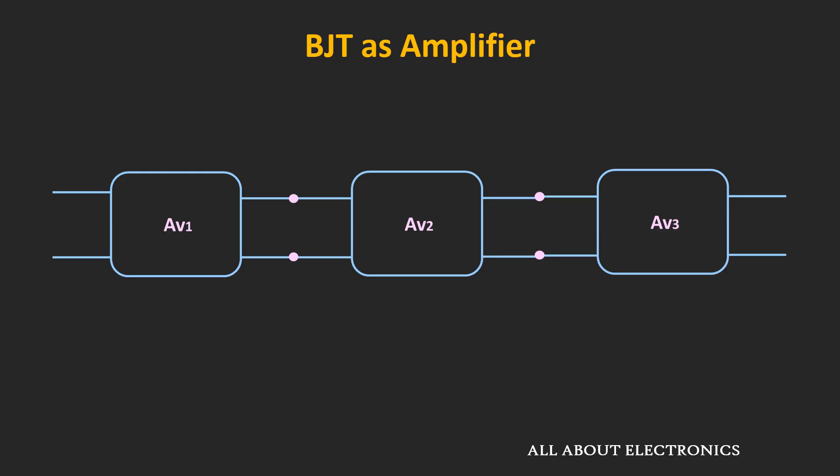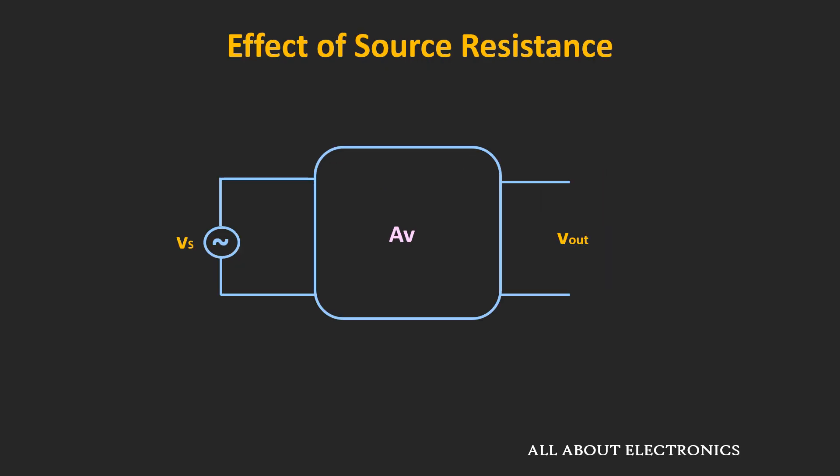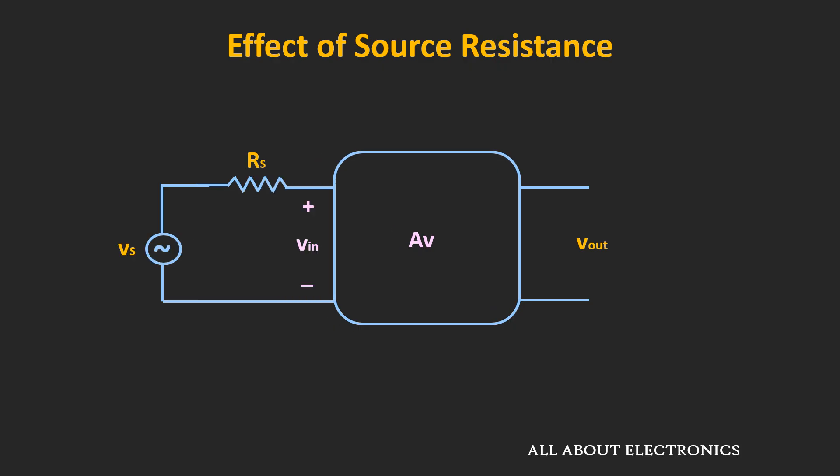To understand this, first let's see the effect of the source and load resistance on amplifier performance, starting with the effect of the source resistance. So far in our discussion, we have assumed that the input applied to the amplifier has zero source resistance. But actually, every source has some finite resistance, and because of this source resistance, the input signal appearing at the amplifier input will be less than the source signal.